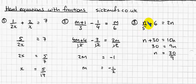So times everything by 5, that means times each bit by 5, times that by 5 just cancels out the 5, so you've got n, times that by 5 gives you 30, times that by 5 gives you 10n.